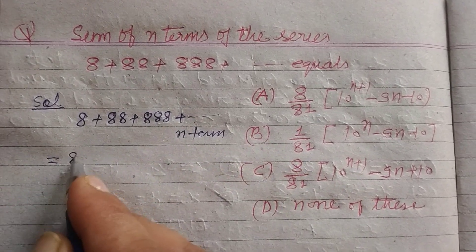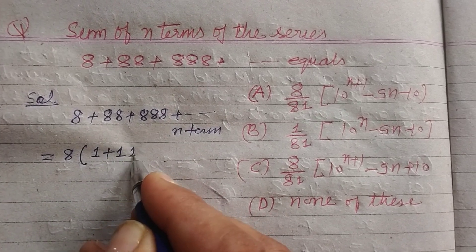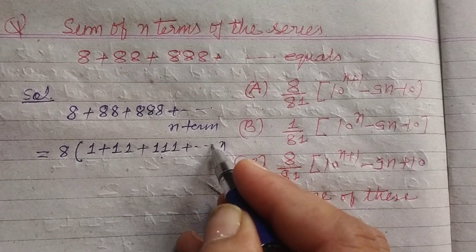8 plus 88 plus 888 and so on up to n terms. We take 8 common from this. So this becomes 1 plus 11 plus 111 plus and so on up to n terms.